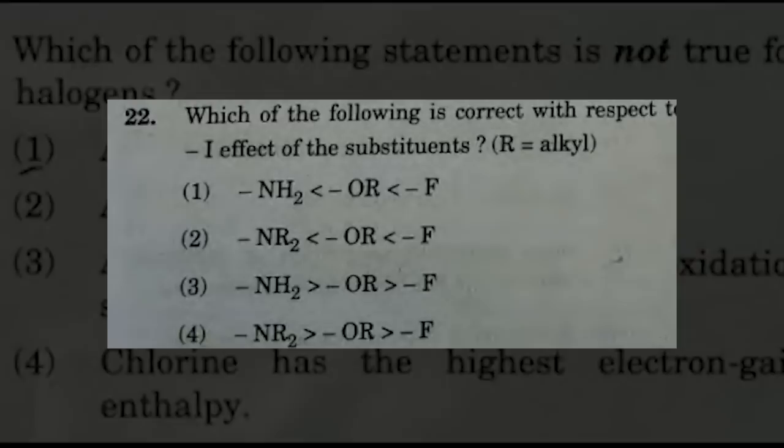The next question is: which of the following is correct with respect to the minus I effect of substituents? The suggested answers are options 1 and 2 — that is, option 1: −NH2, −OR, −F; and option 2: −NR2, −OR, −F.